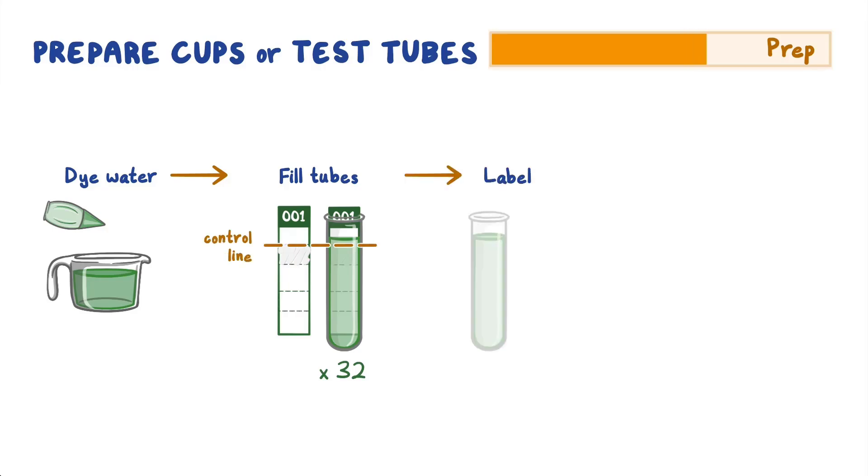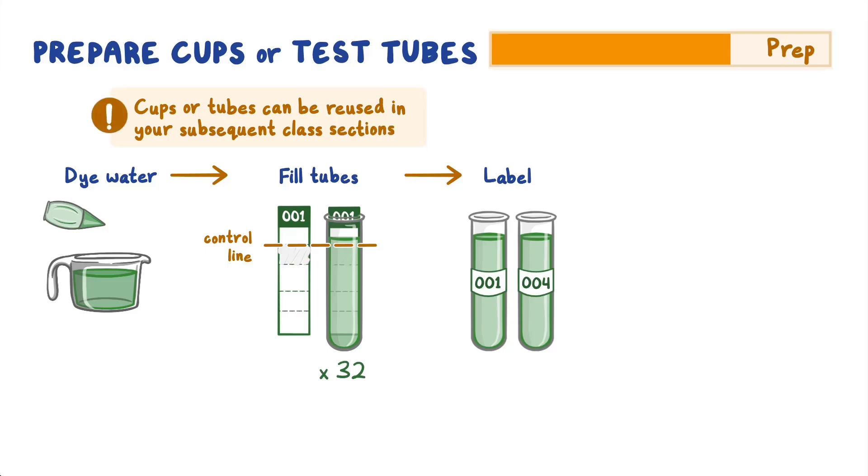Label one test tube per test subject. Note that these sample cups or test tubes can be reused in your subsequent class sections, though 32 new test strips will need to be prepared for each class section. Note that if test tubes are not available, disposable cups, bowls, or beakers will also work if students are able to submerge the test strips.